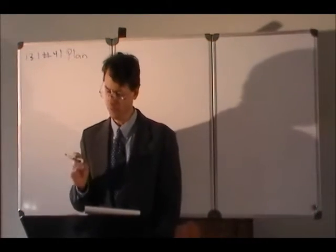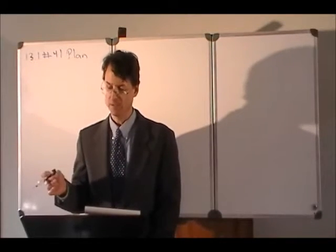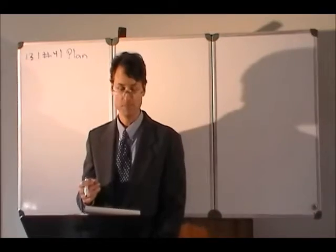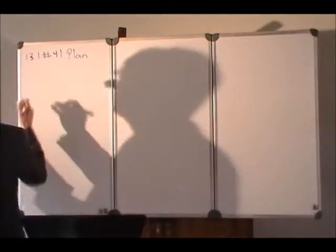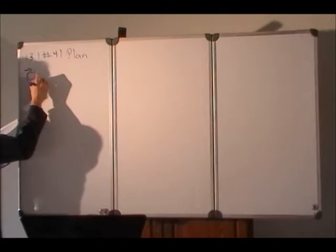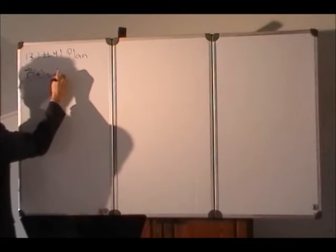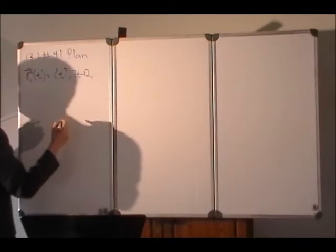And this problem has to do with two objects traveling through space along two different curves and the two different trajectories are given by the first parametric vector function is given by t squared, 7t minus 12,